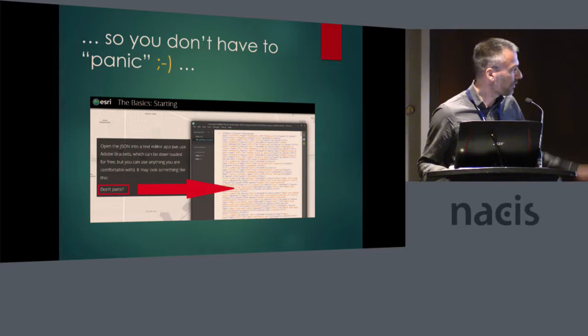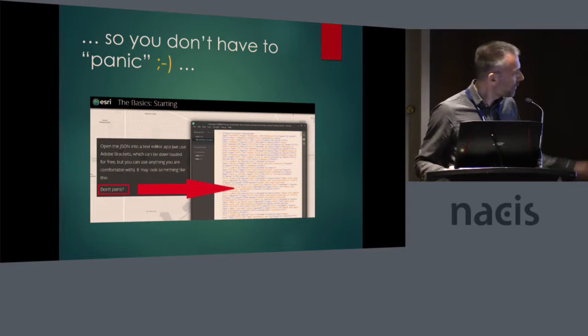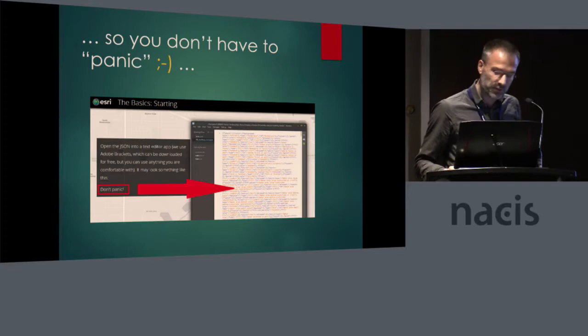JSON is now kind of hot, and you have the ability in JSON to define your styling for vector tiles. But it's really hard. My tools actually take that away — you don't edit JSON, you simply edit layer files.